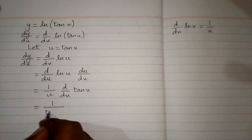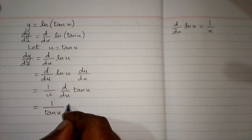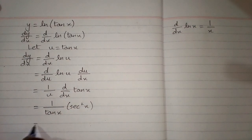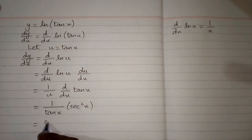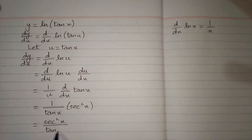So we have 1 upon tangent of x, multiply by the derivative of tangent of x which is sec square x. So the final answer is sec square x upon tangent of x.